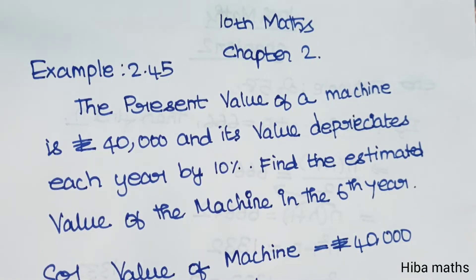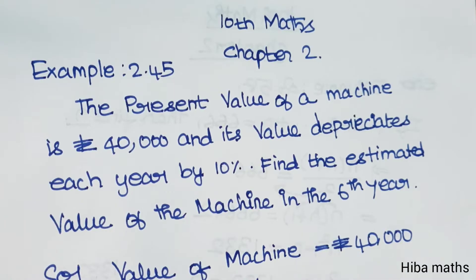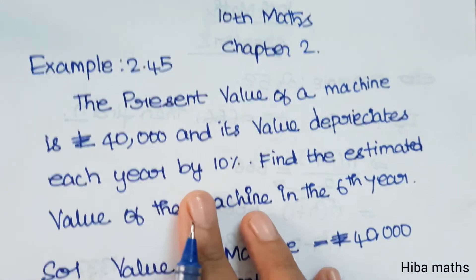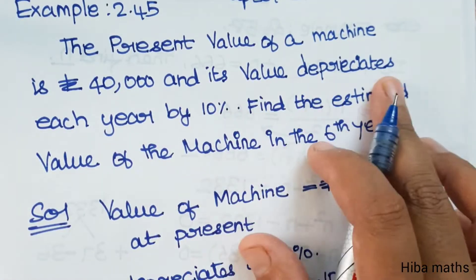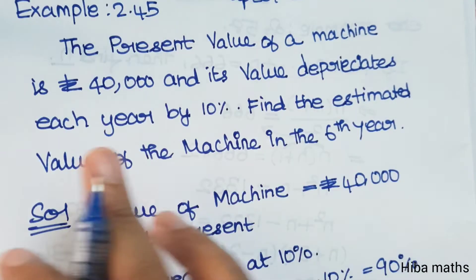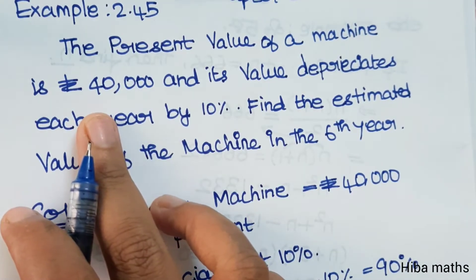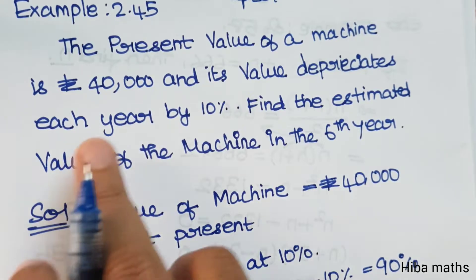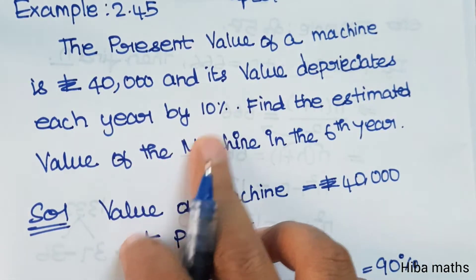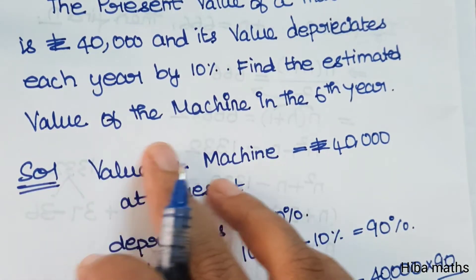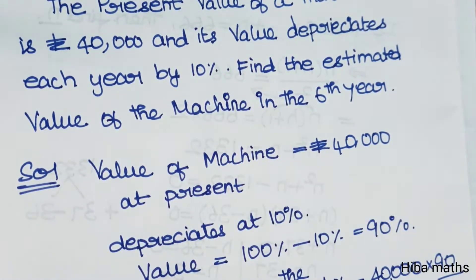Hello students, welcome to Hibamax 10th Standard Max, Chapter 2, Example 2.45. The present value of a machine is 40,000 and its value depreciates each year by 10%. The machine has a value of 40,000 and loses 10% of the amount each year. Find the estimated value of the machine in the 6th year.